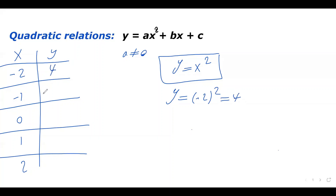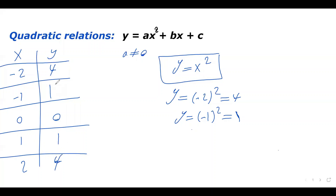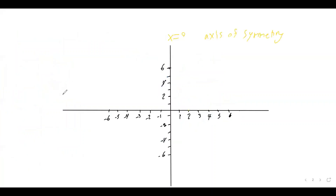Plugging in one for x gives y equals one, and plugging in two for x gives y equals four. These are our points, and now we can plot them in the Cartesian grid and graph the quadratic.